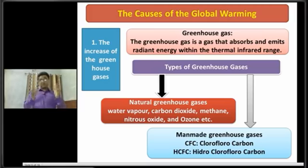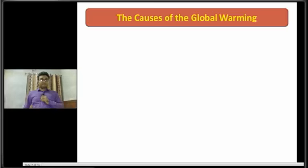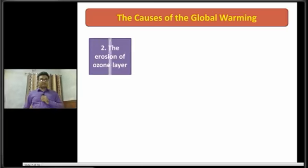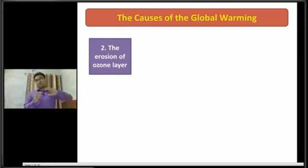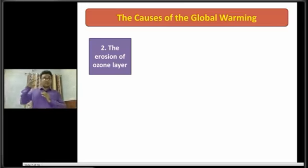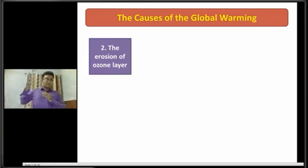Dear students, now I am going to discuss about the next cause of global warming, that is the erosion of the ozone layer. At first you have to understand what is called the ozone layer. Basically, the ozone layer is one of the layers of our atmosphere which absorbs most of the ultraviolet rays of the sun.